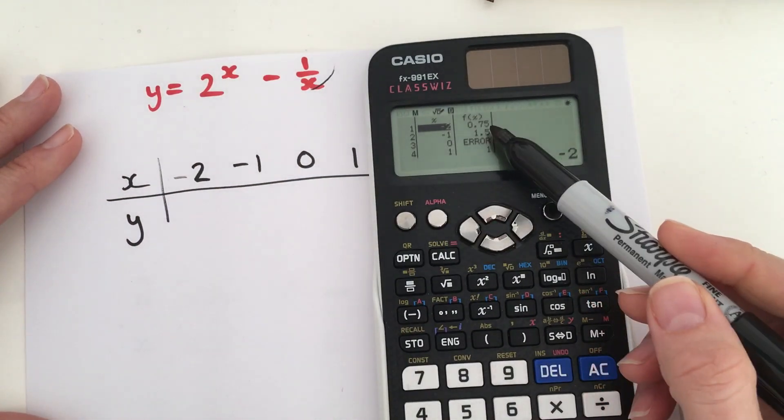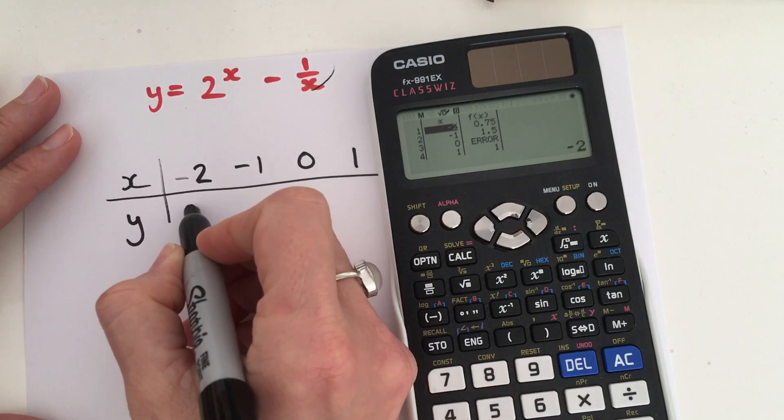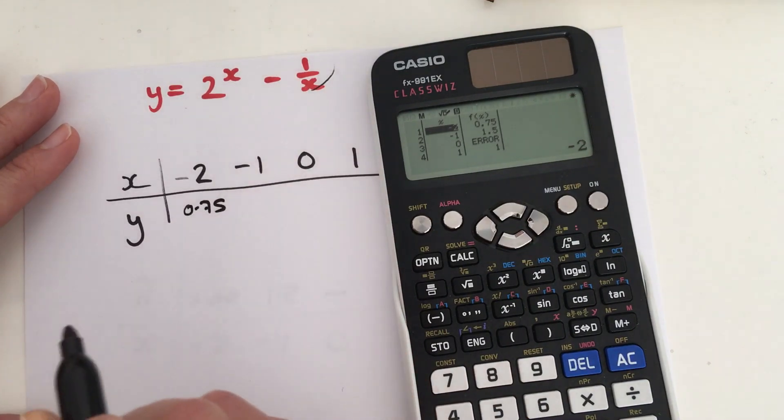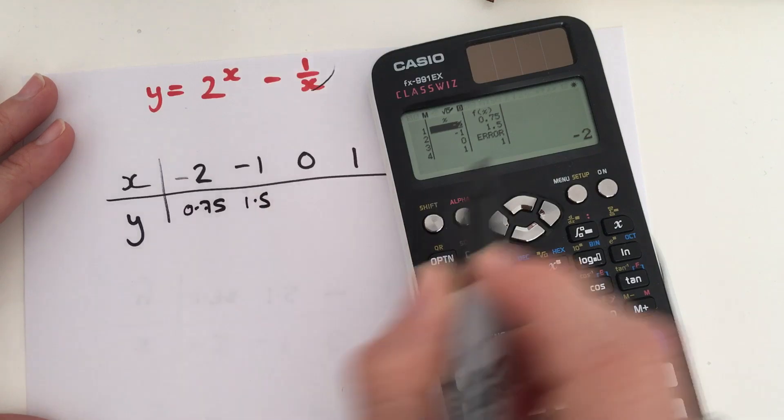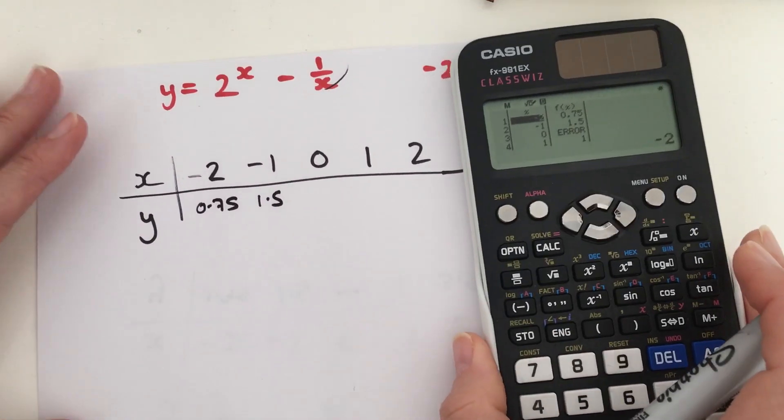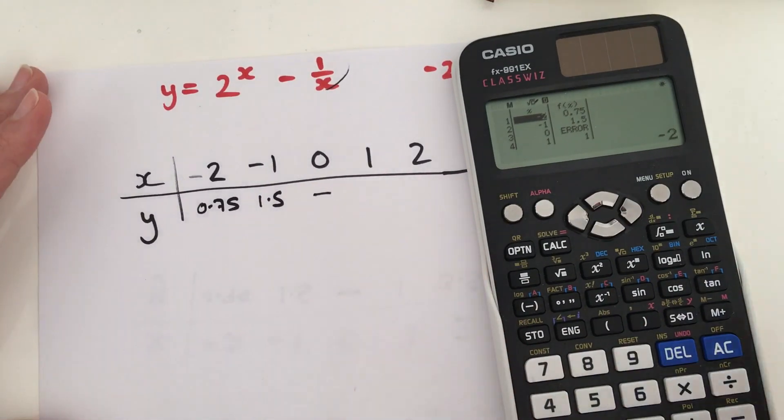So, when x is negative 2, y is 0.75. When x is negative 1, y is 1.5. When x is 0, we have an error. I'm just going to put a line through that.